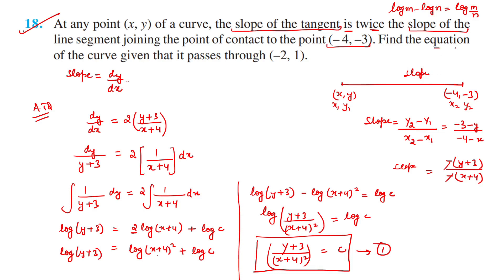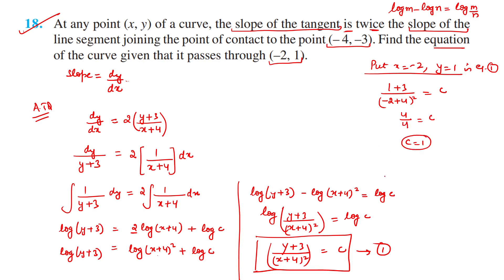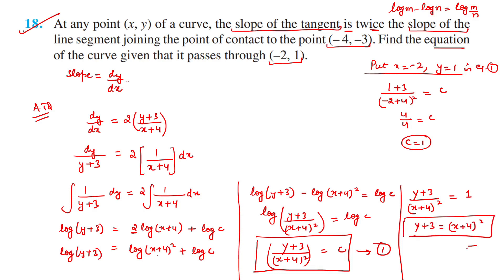Now substitute the point (−2,1): x = −2, y = 1. So (1+3)/(−2+4)² = C → 4/(2)² = C → 4/4 = C → C = 1. Putting C = 1 back: (y+3)/(x+4)² = 1, so y+3 = (x+4)². This is the required equation of the curve.